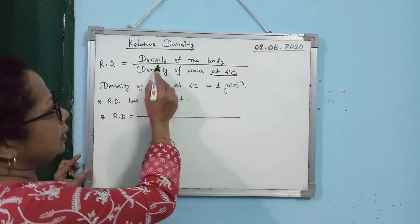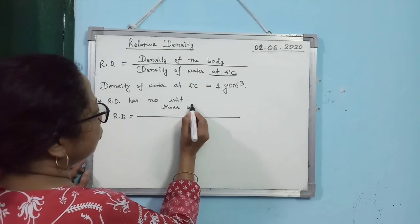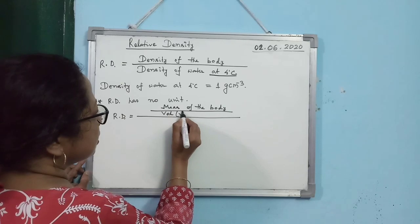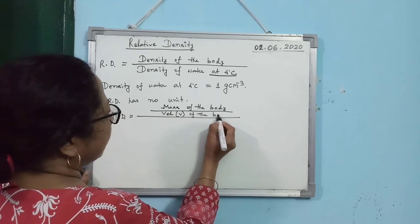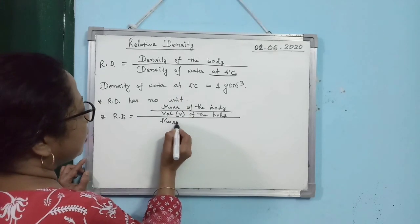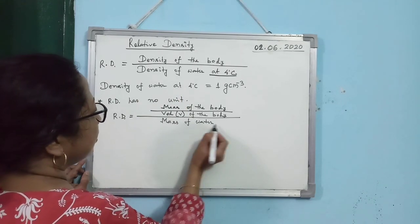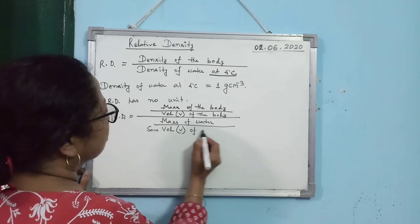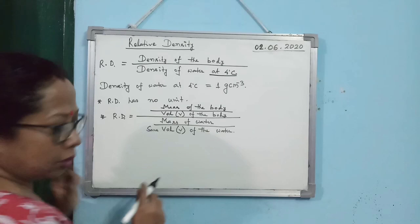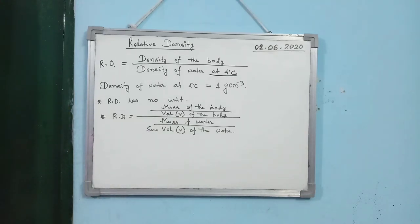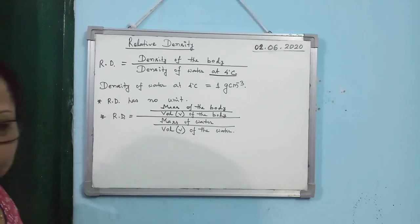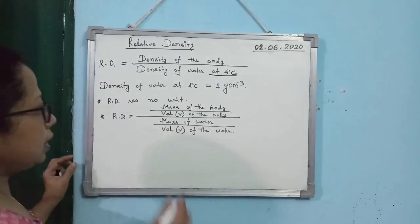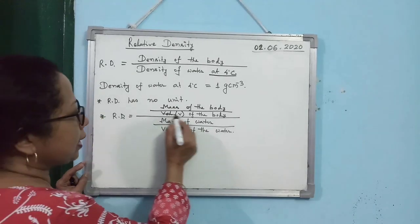Density of the body can be written as mass of the body divided by volume of the body, and for water similarly as mass of water divided by volume of water. What we have done here is take the volume of the body and volume of the water as the same, so you can cancel them.